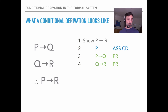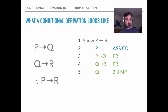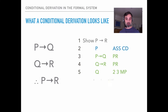Now we look to see if there are any rule applications. Line 3 is a conditional, so we might be able to do modus ponens if we have its antecedent. Its antecedent is P, and we have P on line 2, so modus ponens with lines 2 and 3 gives us Q. We also have another conditional, if Q then R, and Q is the antecedent of line 4. So combining line 4 with our new line Q using modus ponens gives us R.